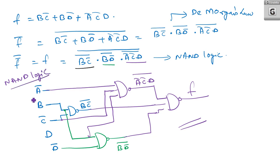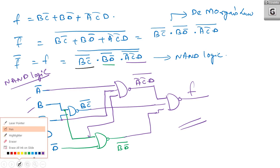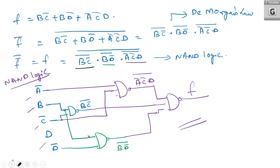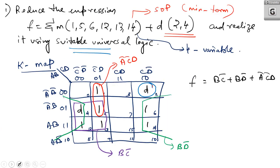So this is the basic NAND logic circuit. The inputs are A, Ā, B, C̄, and D. Note: D should be taken directly as an input. That completes the circuit realization using NAND logic for Problem 1.